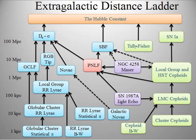The cosmic distance ladder is the succession of methods by which astronomers determine the distances to celestial objects. A real direct distance measurement of an astronomical object is possible only for those objects that are close enough to Earth. The techniques for determining distances to more distant objects are all based on various measured correlations between methods. Several methods rely on a standard candle, which is an astronomical object that has a known luminosity.